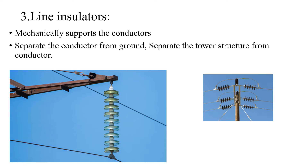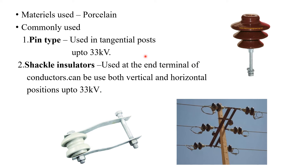The third necessary component for transmission lines is line insulators. They provide mechanical support to the transmission line conductors. Insulators provide the necessary separation between the transmission line and the transmission tower, so that there is no direct connection between the transmission tower and the line. The material used for the production of line insulators is porcelain.